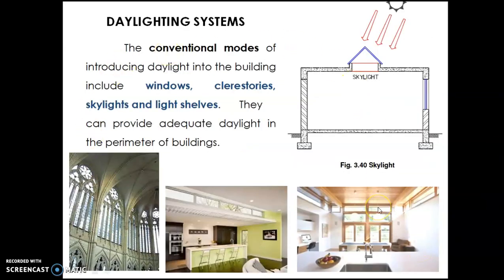We are given a few daylighting systems which are passive in nature and which will help in reducing the artificial lighting required in a building. In conventional modes we have systems such as windows, clerestories, and skylights which we use from historical times. Here is an image of a church where we can see a clerestory window, very common in church buildings, and a modern clerestory for a living area where lighting is achieved through the clerestory. You can also have window openings bringing good daylighting, and skylights as well.